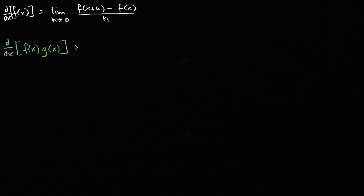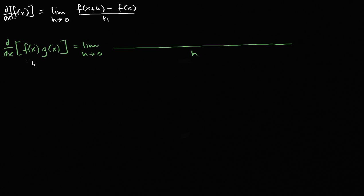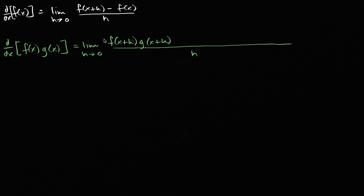Well, if we just apply the definition of a derivative, that means I'm going to take the limit as h approaches zero. In the denominator I'm going to have an h, and it's going to be a big rational expression. I'm going to evaluate this thing at x plus h, so that's going to be f of x plus h times g of x plus h. And from that, I'm going to subtract this thing evaluated at x, so that's going to be minus f of x times g of x, all of that over h. All I did so far is apply the definition of the derivative to f of x times g of x.